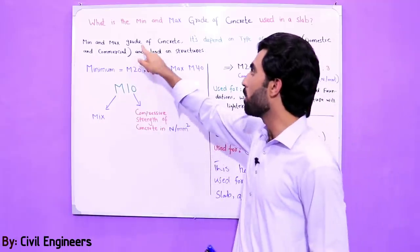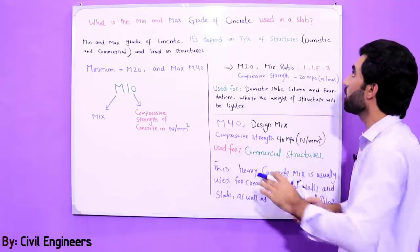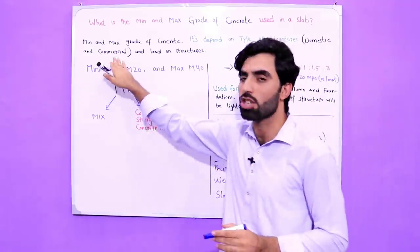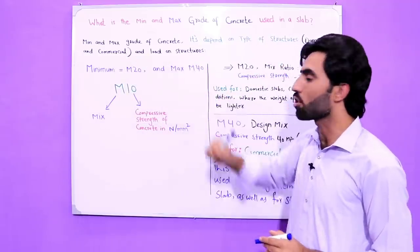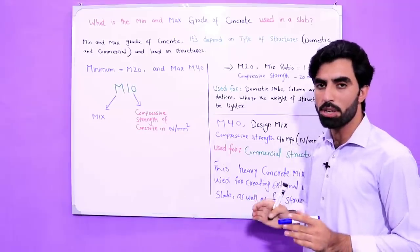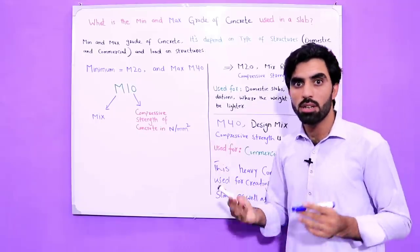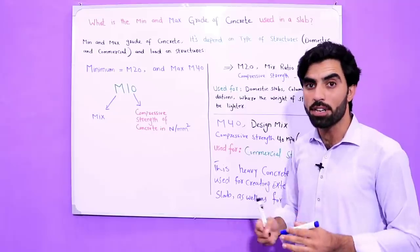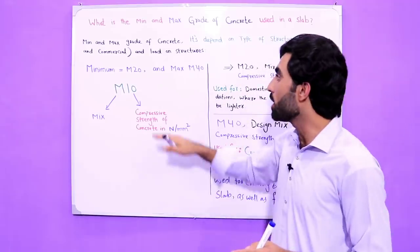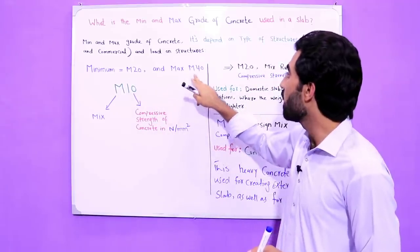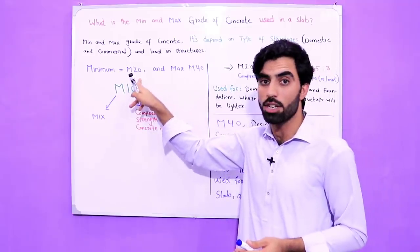First of all, the minimum and maximum grade of concrete depends on the type of structure, because we have domestic structures and commercial structures, and also on the load on structures. For domestic and commercial buildings, we can take different grades of concrete. The minimum grade of concrete is M20 and the maximum is M40.